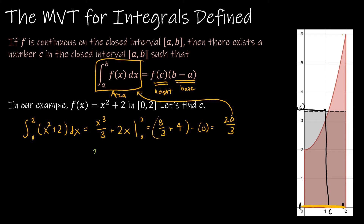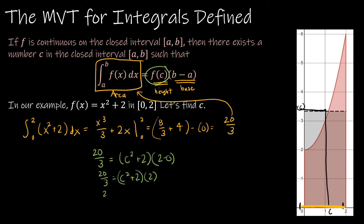Now I set 20 thirds — the area — equal to F of C times B minus A. F of C is c squared plus 2, and B minus A is 2 minus 0. So: 20 thirds equals (c squared plus 2) times 2. Dividing each side by 2: 10 thirds equals c squared plus 2. Subtracting 2 (as 12 sixths): 8 sixths equals c squared, so c squared is 4 thirds. Taking the square root gives 2 over radical 3, which we rationalize to 2 radical 3 over 3.